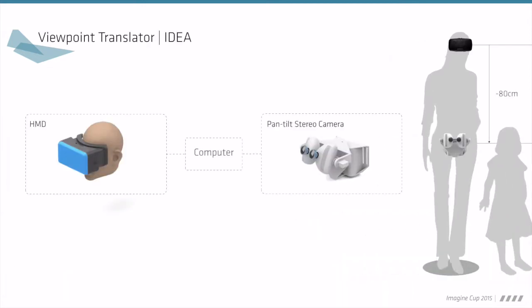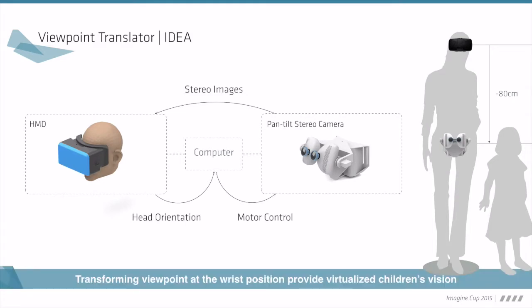This shows the idea of the viewpoint translator. Sensors in the head-mounted display detect head orientations, then the pan-tilt stereo camera follows that. Transforming viewpoint at the wrist position provides virtualized children's vision.